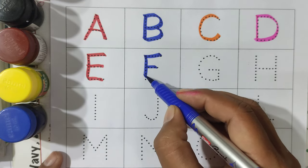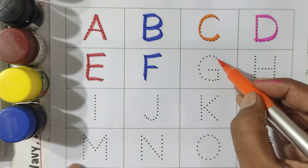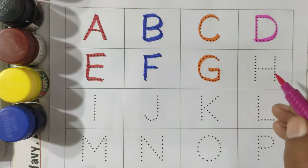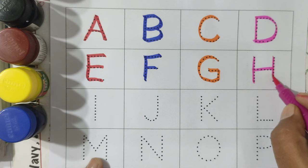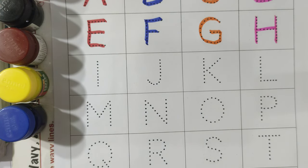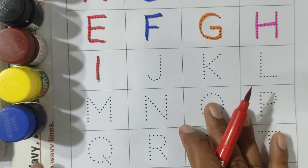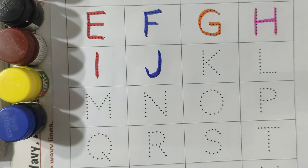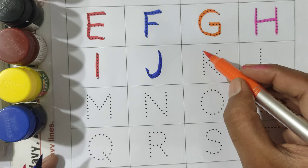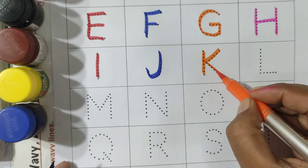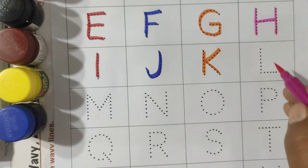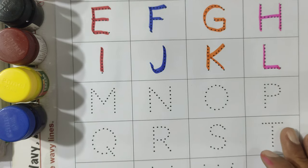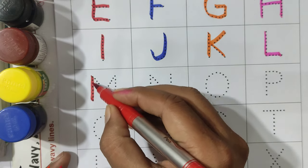F for Fish. F for Fish. G, G for Girl. H, H for Hen. H for Hen. I, I for Ice Cream. J, J for Jug. J for Jug. K, K for Kite. L, L for Lion. L for Lion. M.